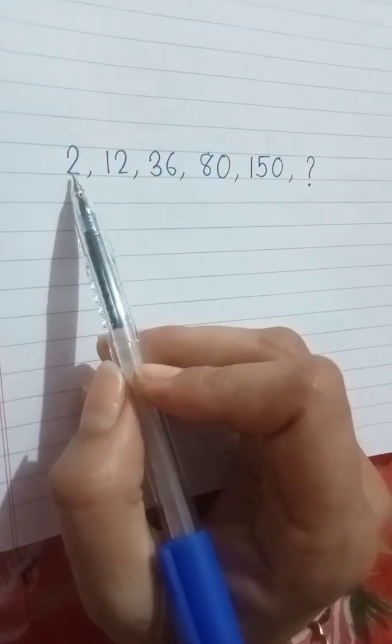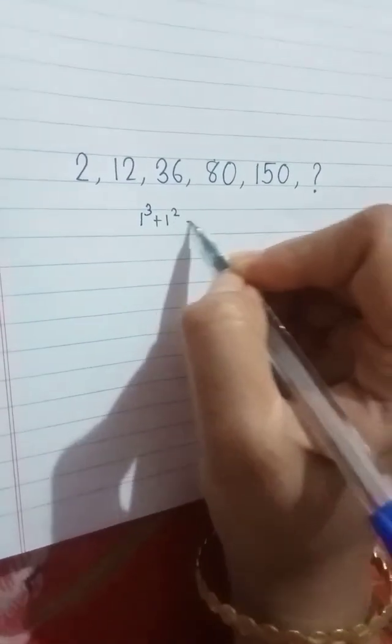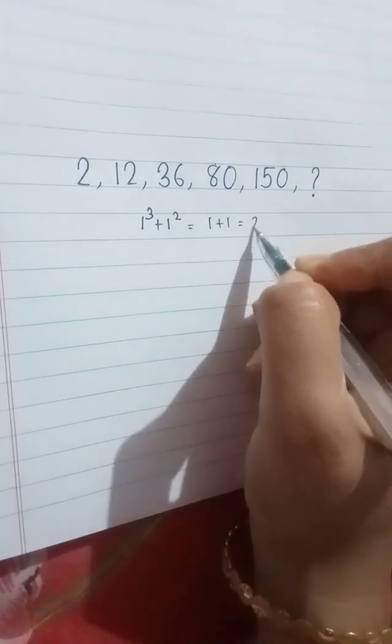First we see the number 2. Here we write 1 cube plus 1 square. We get 1 plus 1 that is 2.